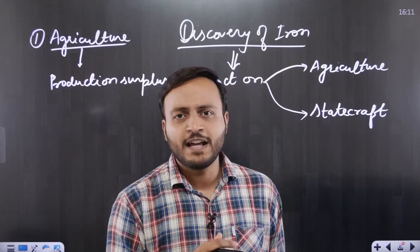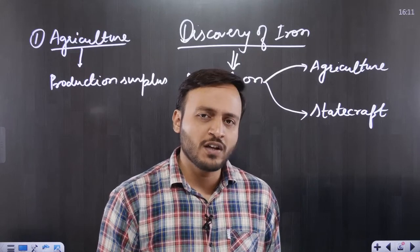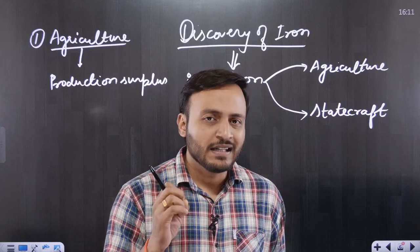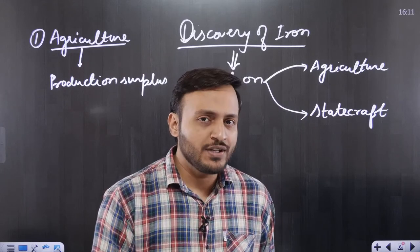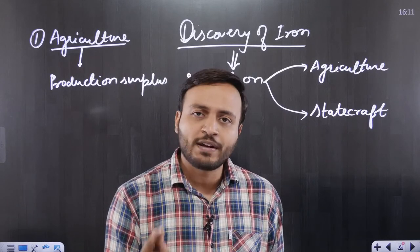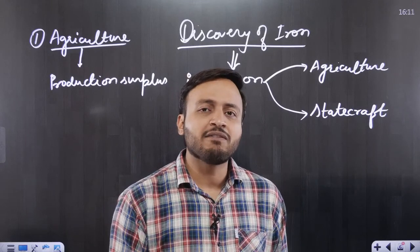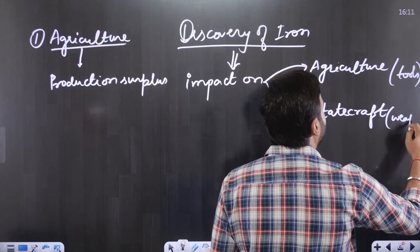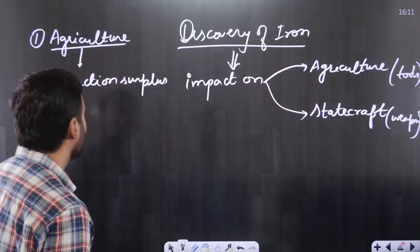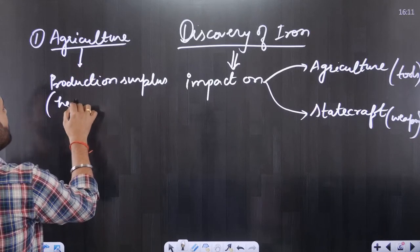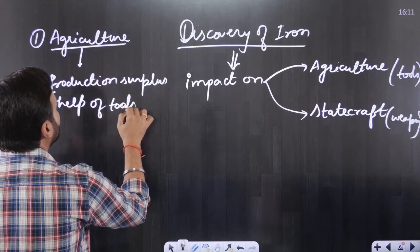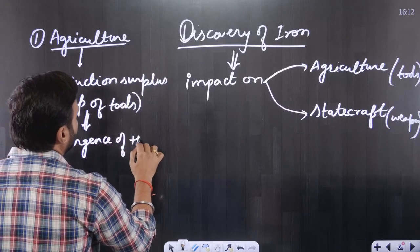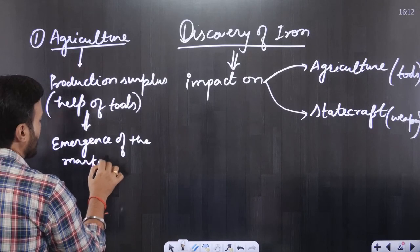Production surplus in agriculture with the help of iron tools led to the emergence of a market system. When markets develop, there is more incoming and outgoing movement of people, which means better exchange of people, products, and ideas. This exchange influences the development of civilization. Simply put: production surplus leads to economic prosperity, economic prosperity leads to constructive development, and constructive development leads to civilizational and urban growth.